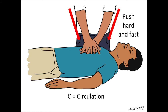The pressure should be coming from your elbows. Keep your arms straight and use your upper body and shoulders to push down. Hard means the chest needs to go down by five centimetres or two inches each time. This may seem like a lot but you need to push hard for effective circulation.